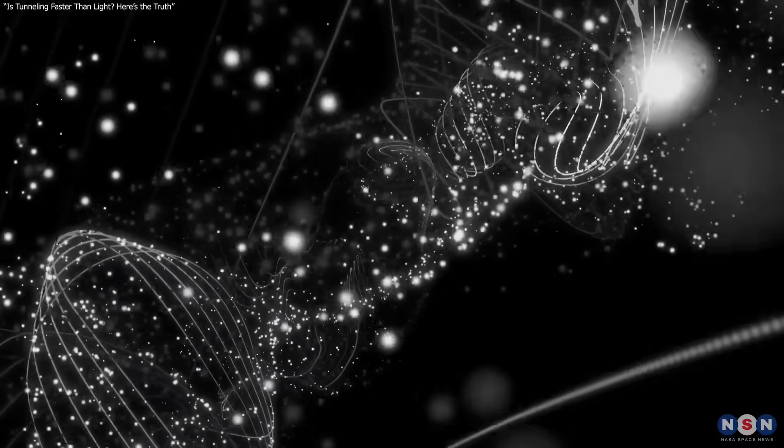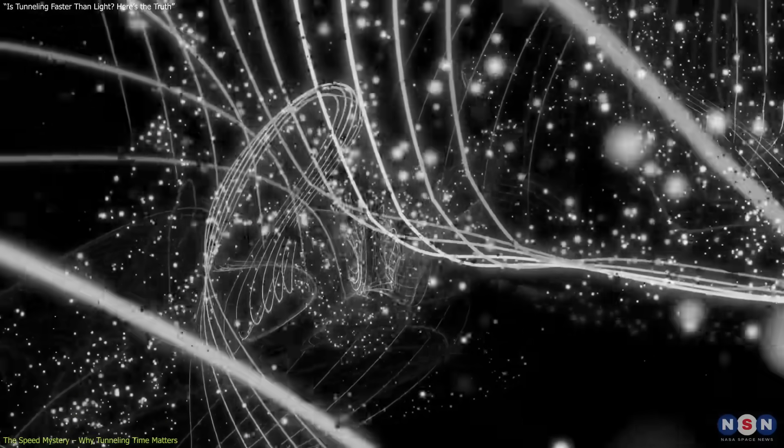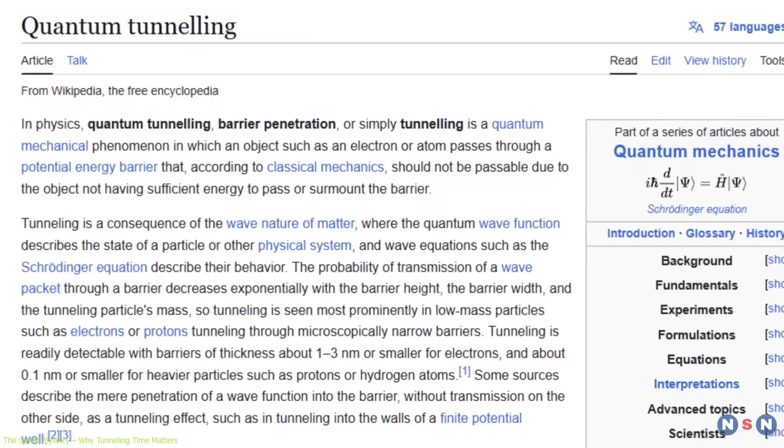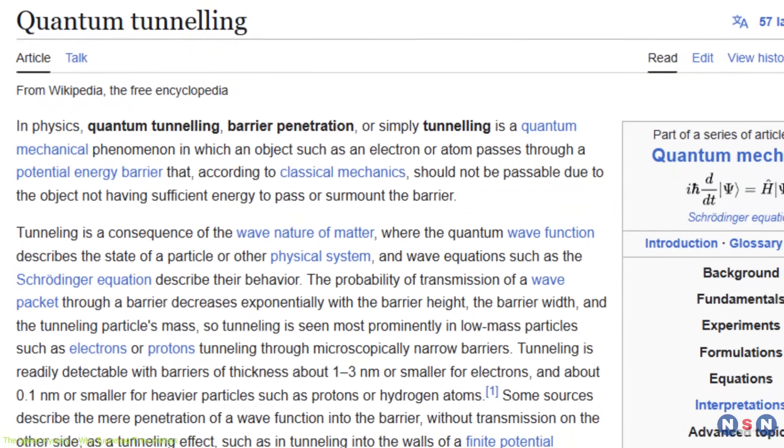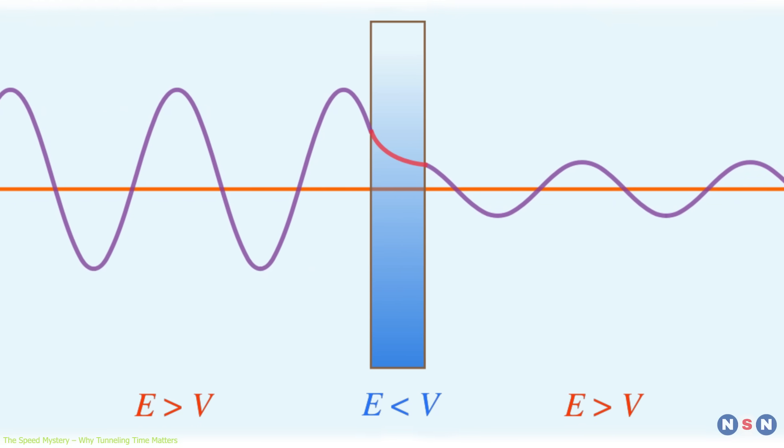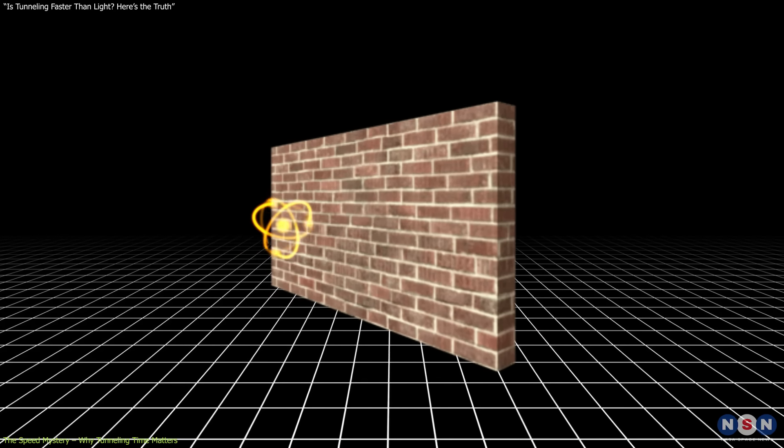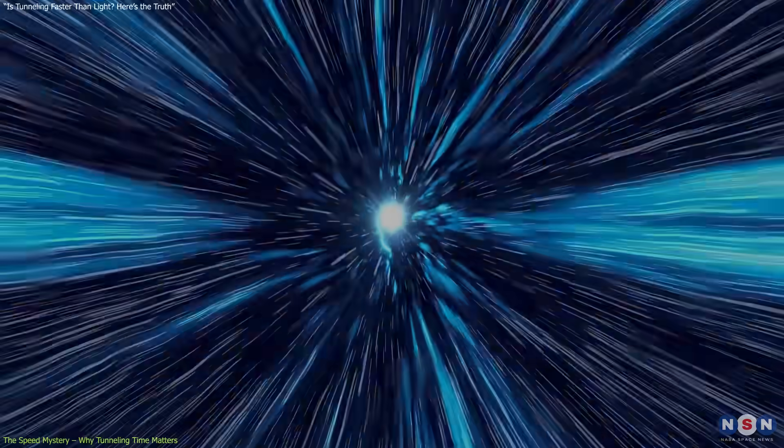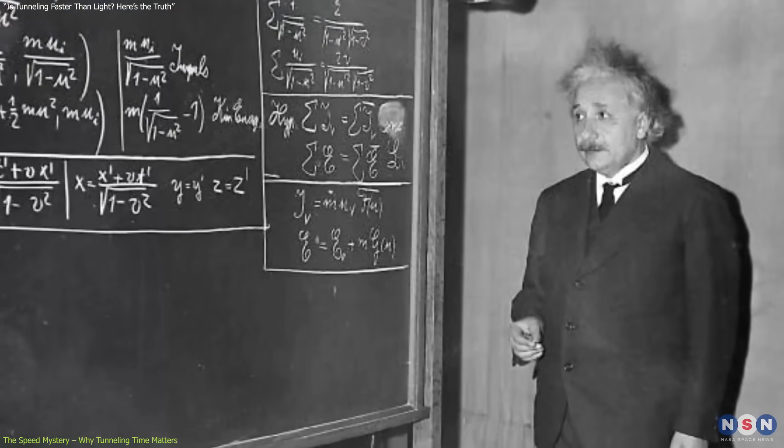At the quantum scale, particles behave in ways that defy our classical understanding of the universe. One of the most fascinating and controversial phenomena is quantum tunneling, the ability of particles to traverse energy barriers they theoretically shouldn't be able to cross. Traditionally, this behavior sparked fierce debate. Could particles tunnel faster than light, violating the cosmic speed limit set by Einstein's theory of relativity?